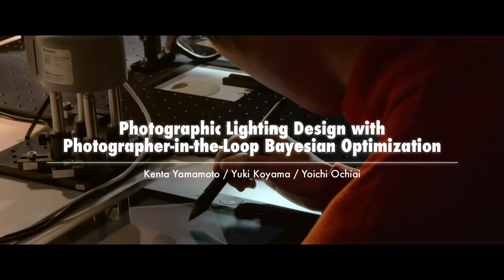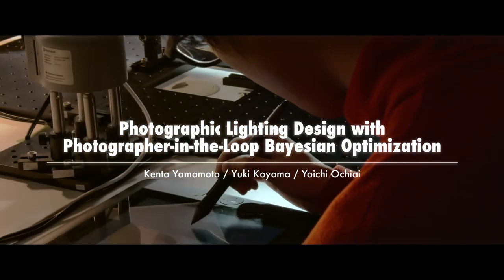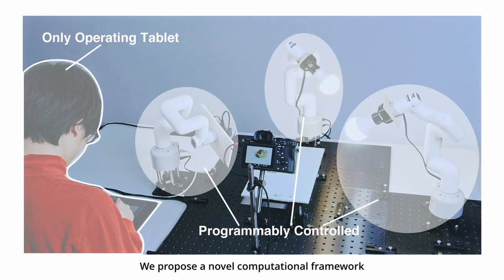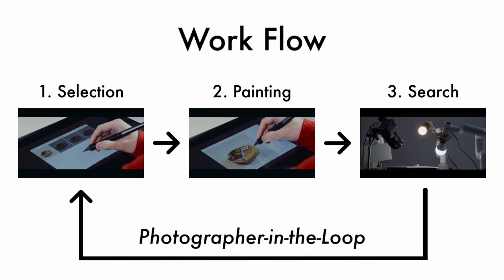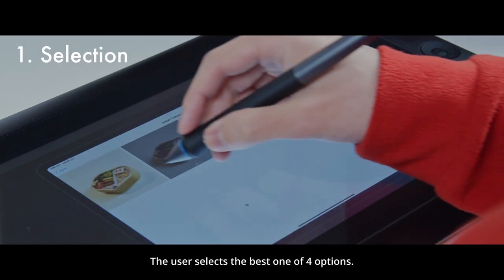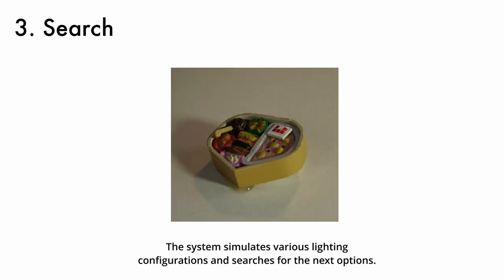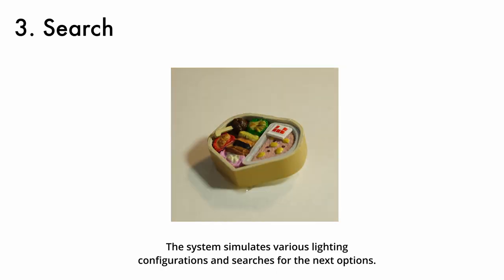Photographic Lighting Design with Photographer-in-the-Loop Bayesian Optimization. We propose a novel computational framework enabled by Photographer-in-the-Loop Optimization. Our framework consists of three steps: preference-based selection, rough painting, and search for the next options.